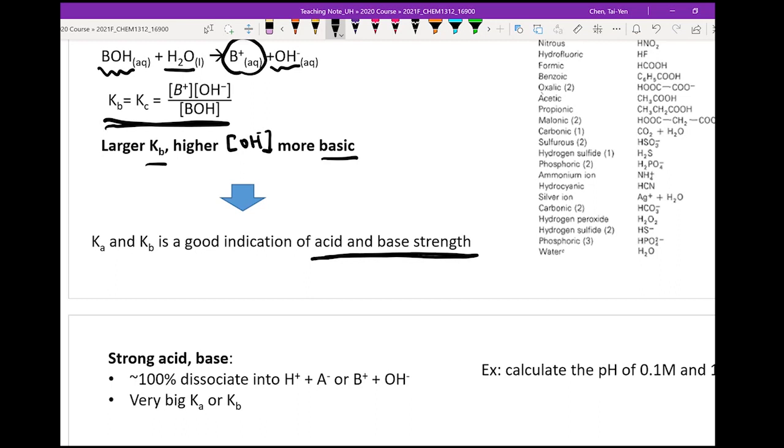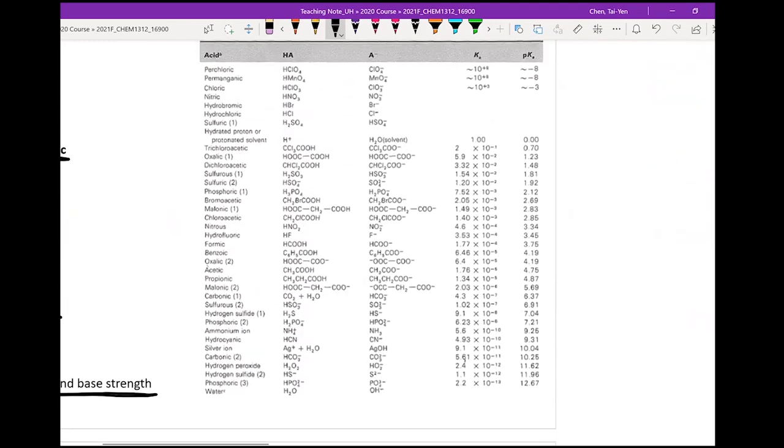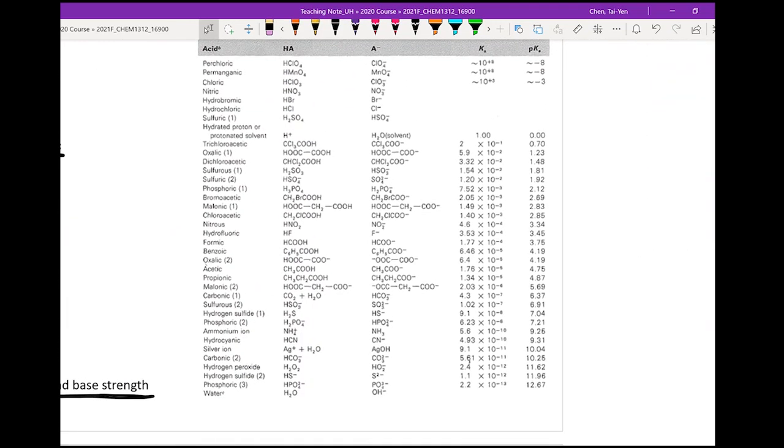The larger the Ka, the stronger the acid. The larger the Kb, the stronger the base. This is another way to tell the relative acidity or basicity of a solution.